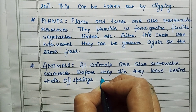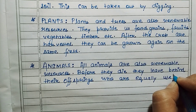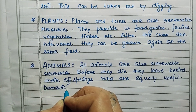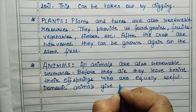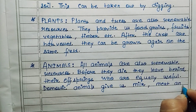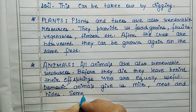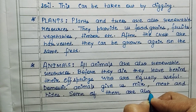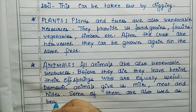Animals are also renewable resources. Before they die, they leave behind their offspring, who are equally useful. Domestic animals give us milk, meat, and hides. Some of them are also used as beasts of burden.